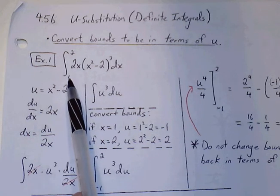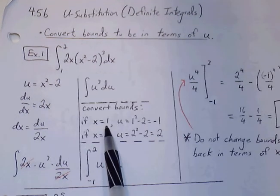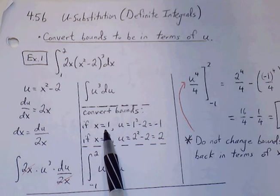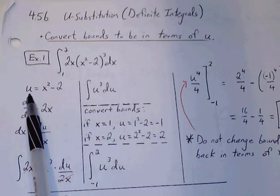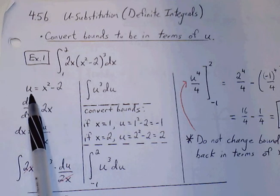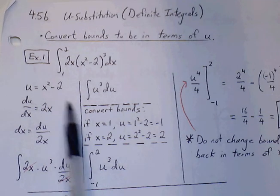So let's look at the lower bound first. So if we know that the lower bound is 1, we can convert that by using the relationship here between u and x. We know that u is x squared minus 2. So if x is equal to 1,